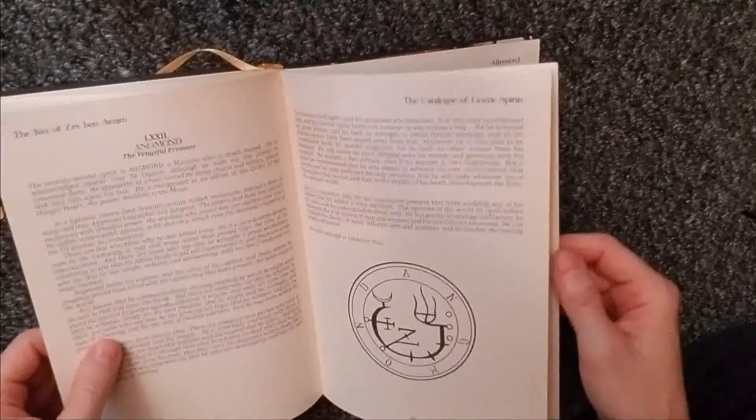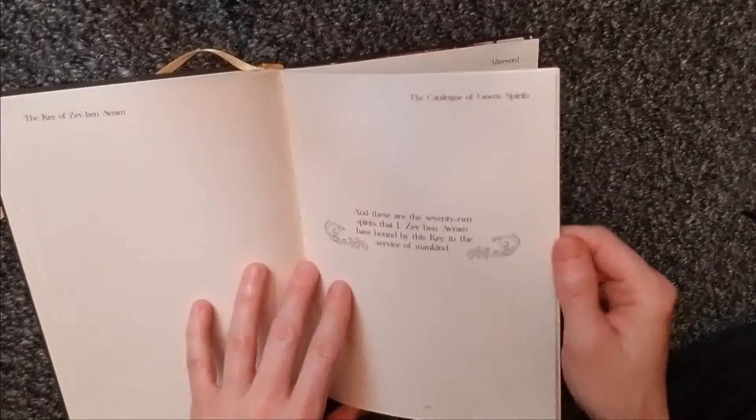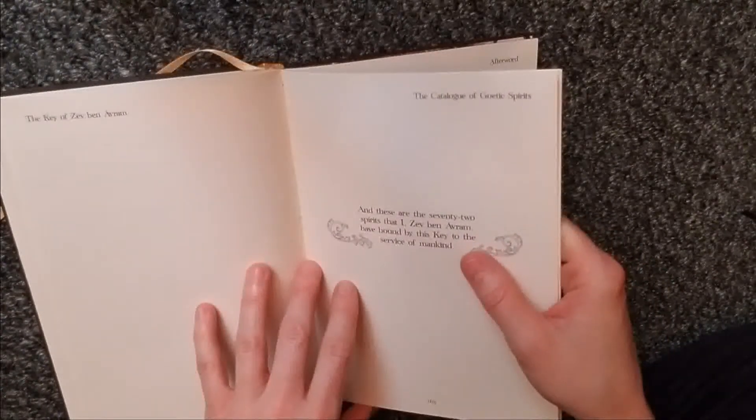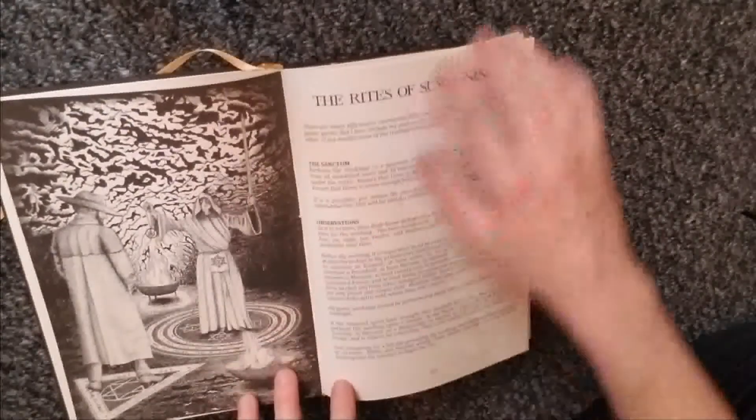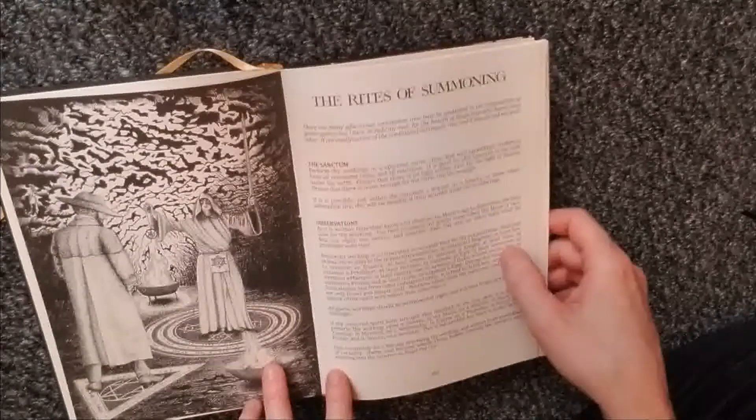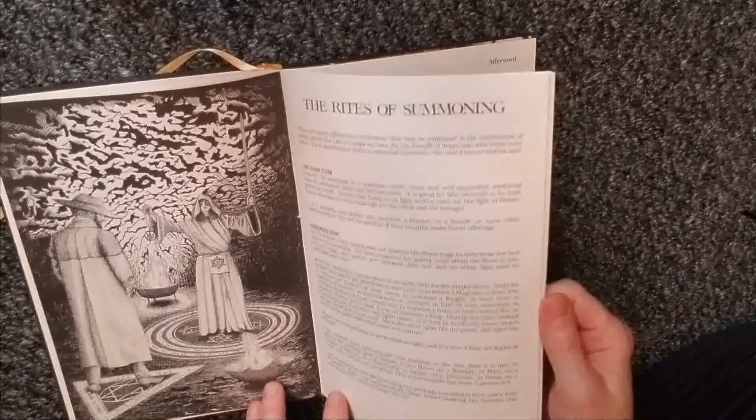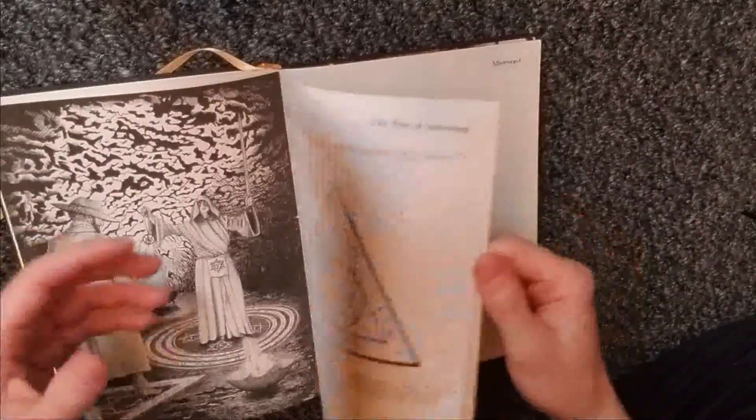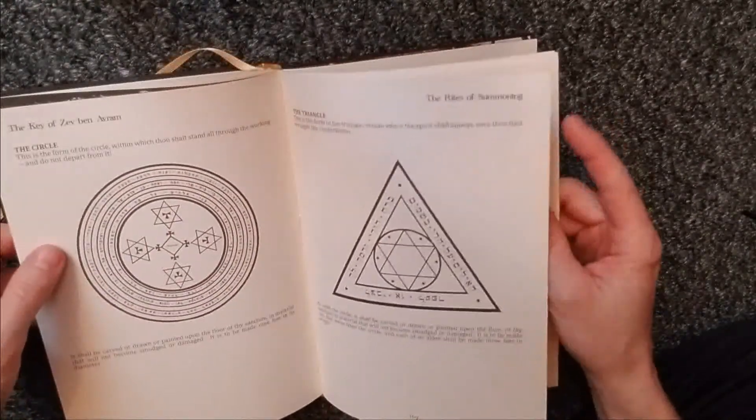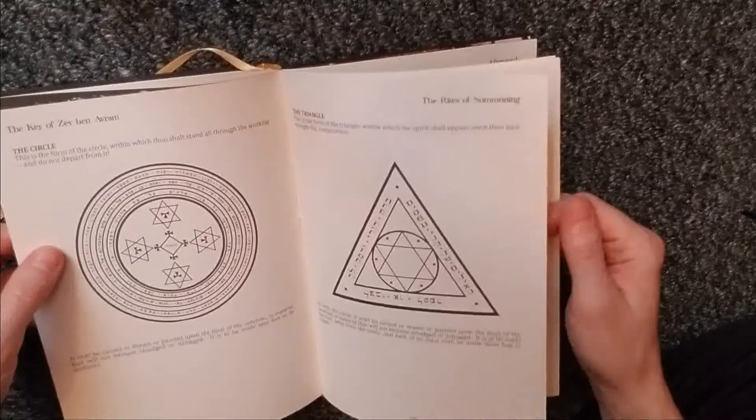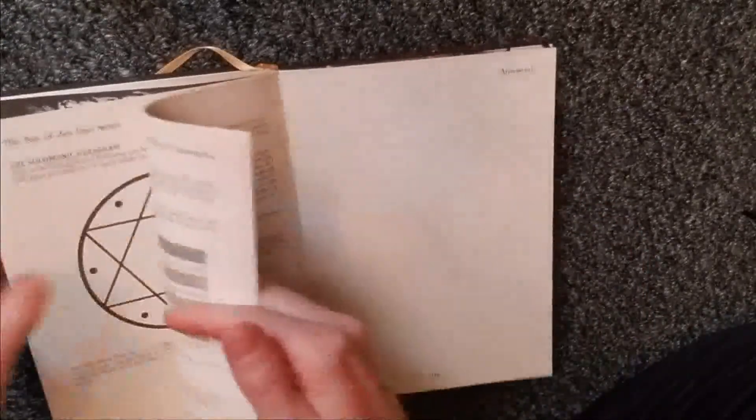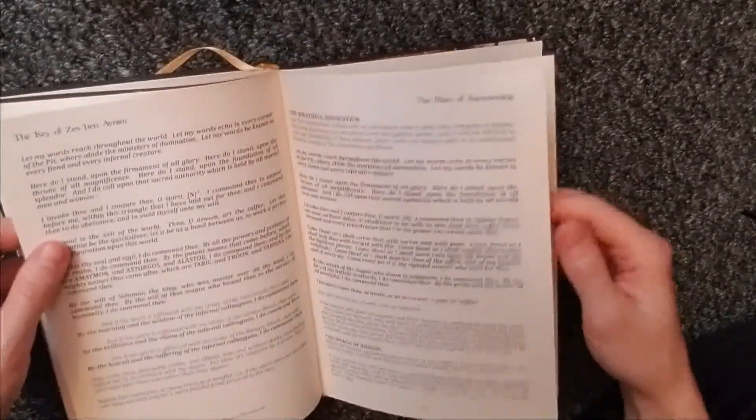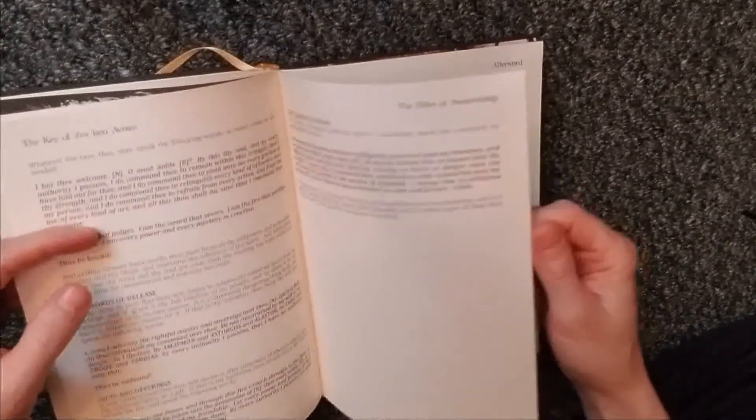And these are the 72 spirits that I, Zev Ben Avram, have bound by this key to the service of mankind. I wondered if they were going to have any full page illustrations in this one. And there we go. That's awesome. The rites of summoning. I wonder if I'm going to use my format or this one. It seems very hoity-toity traditional Western ceremonial magic and not so much the ecstatic channeling partial possession thing that I do. But, you know, me. Edgelord. Gotta go with the extreme.